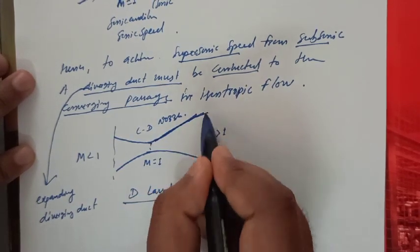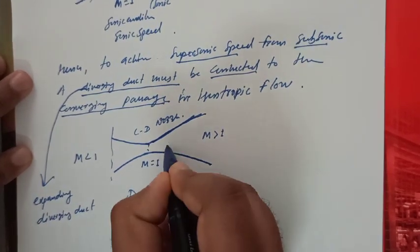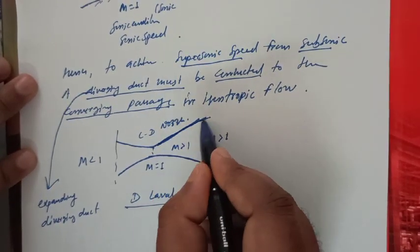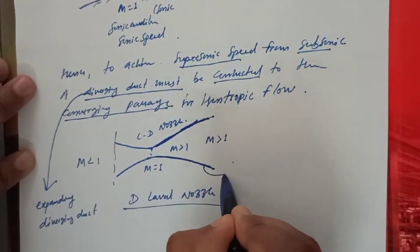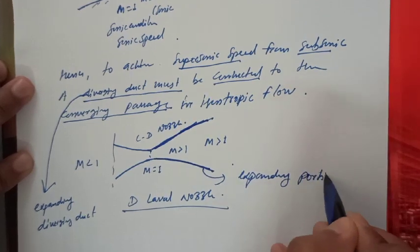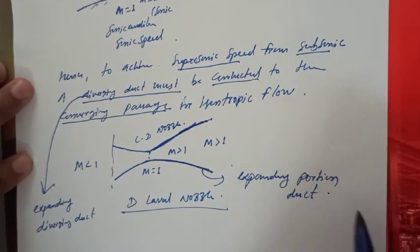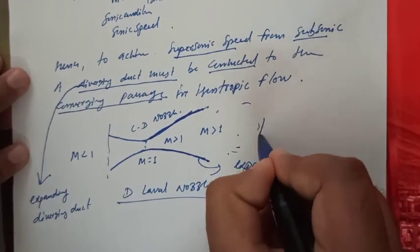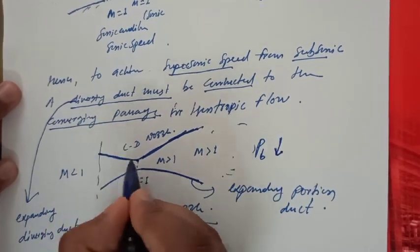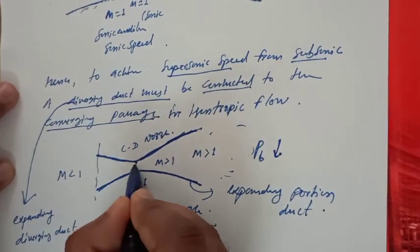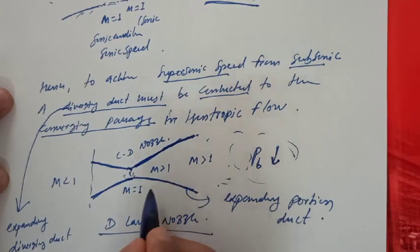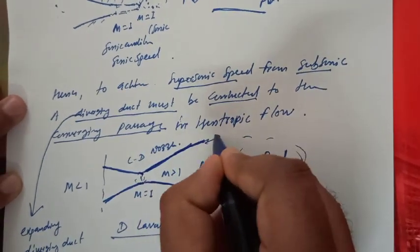It does not mean that M equal to 1 will always be achieved. The diverging duct must be an expanding portion — this must be an expanding portion duct. The back pressure must be reduced sufficiently so that first the sonic condition is achieved at the throat in the converging passage, and then expansion continues in the diverging portion as well.